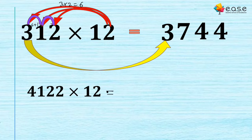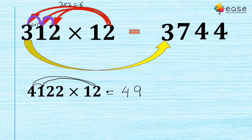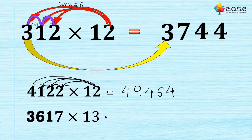Let's quickly try another question. You write the first digit 4 as it is. Then 2 × 4 = 8, and 8 + 1 = 9. Then 2 × 1 = 2, 2 + 2 = 4. Then 2 × 2 = 4, and 4 + 2 = 6. And 2 × 2 = 4. So this is the process.